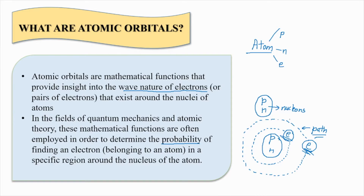Now why do we need to determine the probability of finding the electron? We have to find electrons because electrons are nothing but energy. We all know that protons are positively charged, neutrons are neutral, and electrons are negatively charged. This negative charge is nothing but negative energy, and this energy can be used in creating various other energies. For example, whenever we want to create electricity, we move the electrons in a particular direction. When all the electrons are moving in a particular direction, the current gets generated by itself.